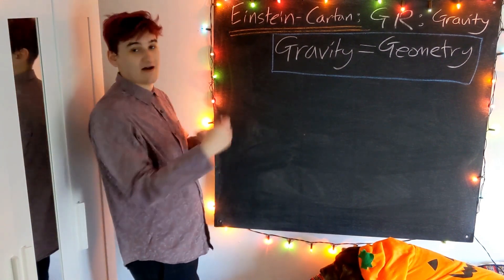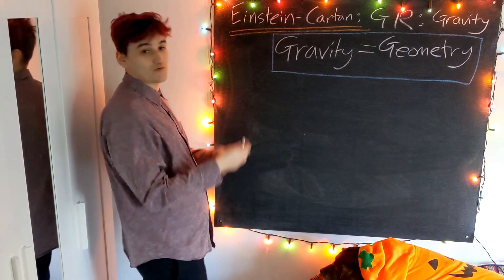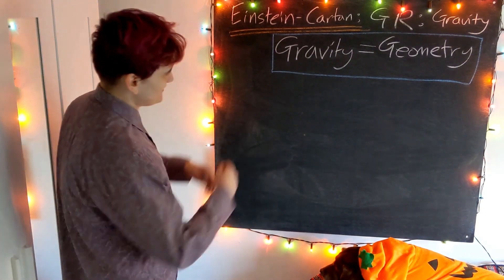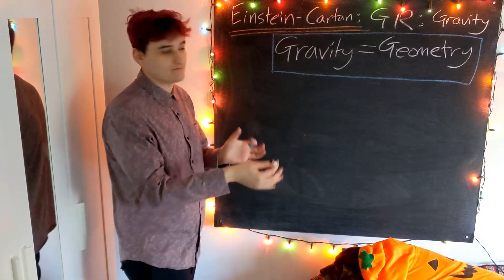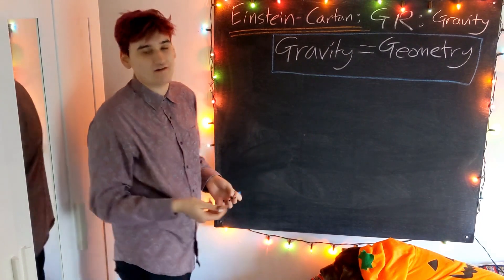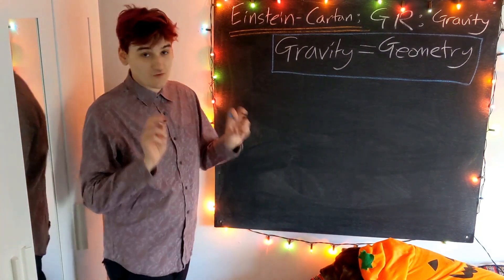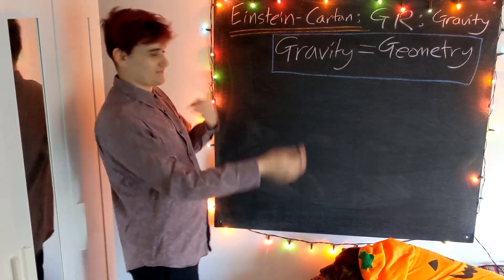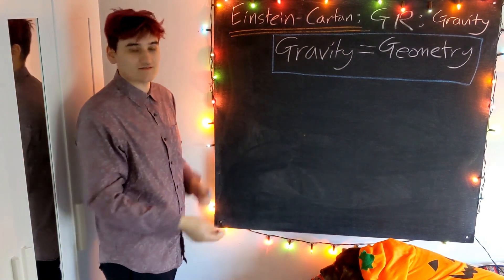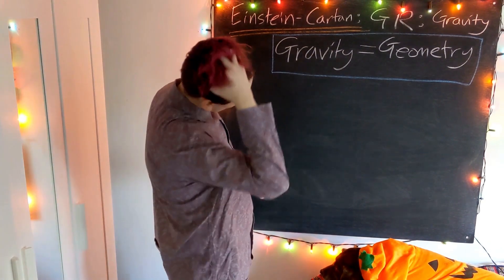We have three dimensions of space and the dimension of time. We package them together as a four-dimensional object. The geometry of this four-dimensional manifold is what gives rise to the force or the effect of gravity. It's not actually a force in the traditional sense, but rather a consequence of particles that travel through the curved geometry.